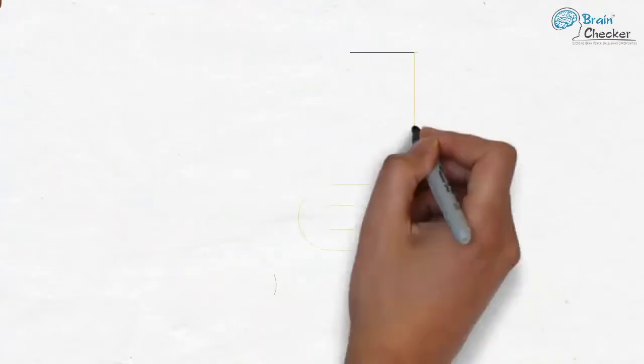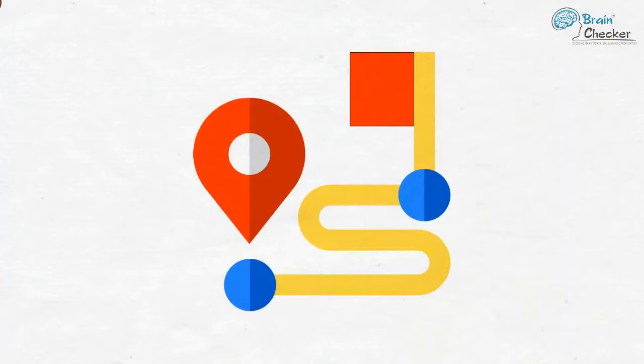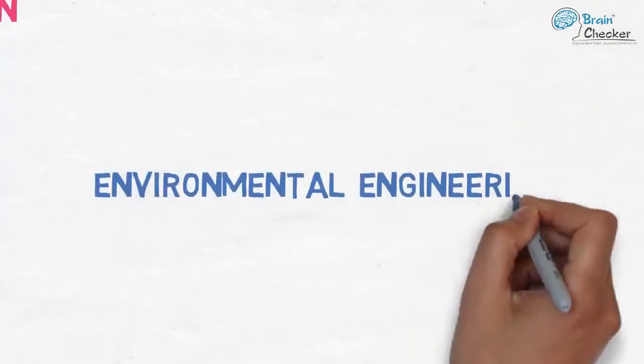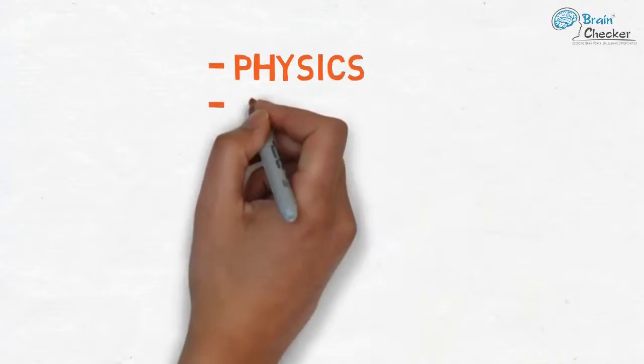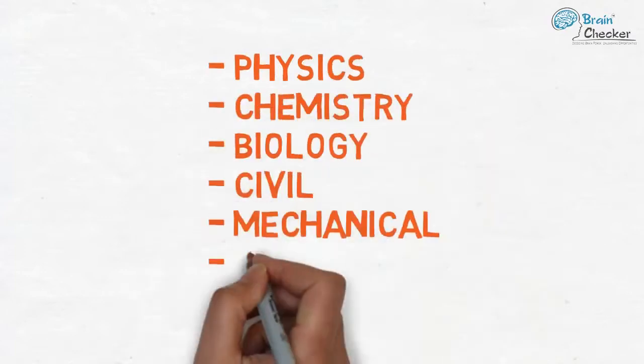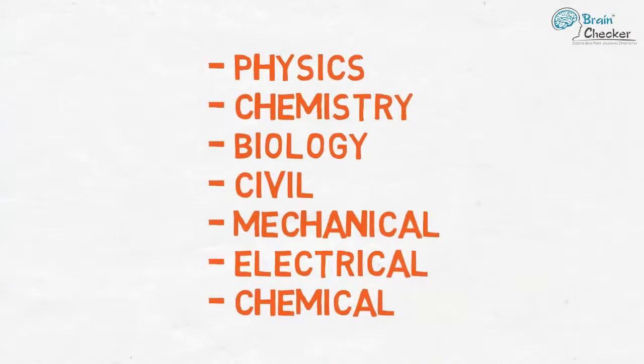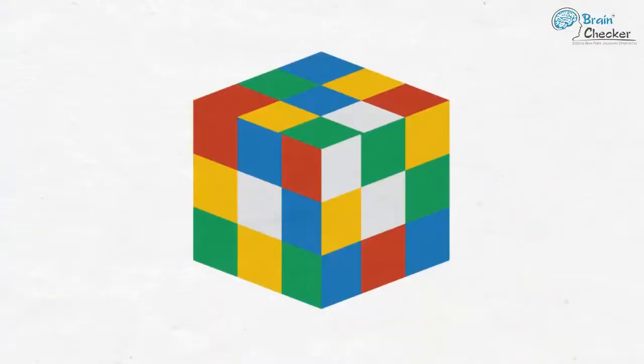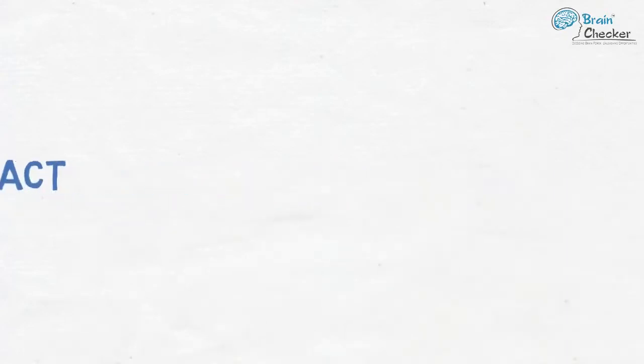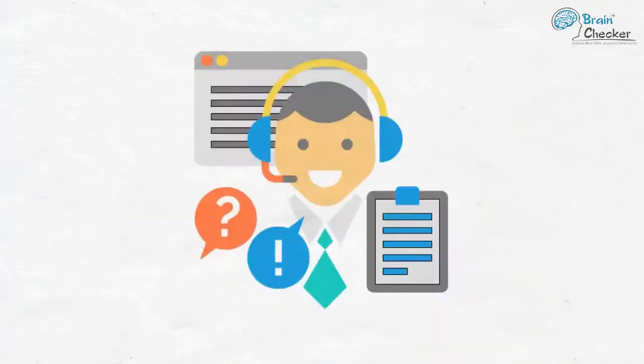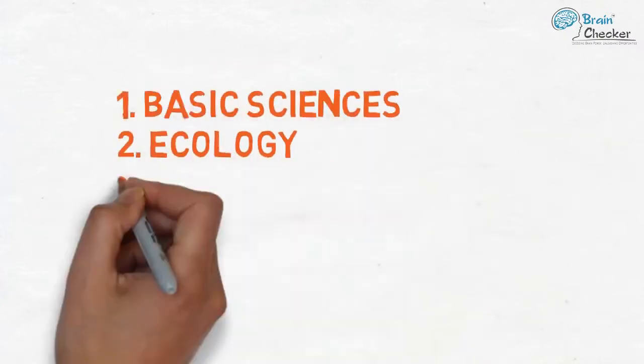Environmental engineering focuses on the continuous improvement of natural resources like water, air, and land, and reduces the harmful effects of pollution. One needs a liking for concepts from physics, chemistry, and biology, as well as civil, mechanical, electrical, and chemical engineering. It's a mixed field catering to multiple industries. Students learn about environmental impact assessment and management. Specializations include basic sciences, ecology, economics, social sciences, radiological science, and many others.